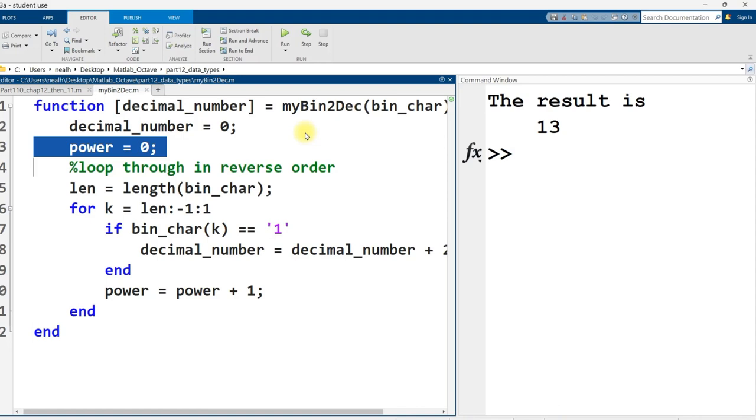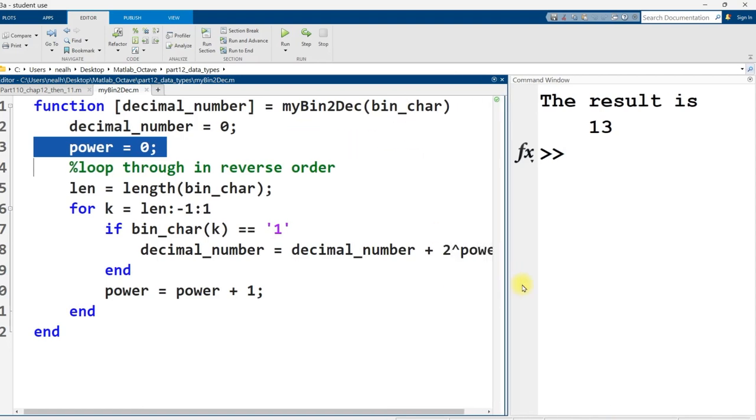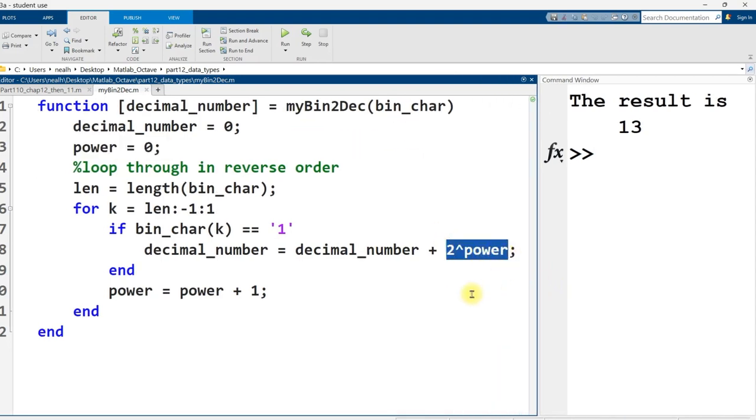Tens, 10 to the one is 10. Hundreds, 10 to the two is 100. Thousands, 10 to the three. The exponent, the power, goes up by one each time. And it's the same with binary, except the binary uses powers of two rather than powers of 10.